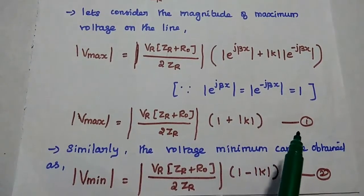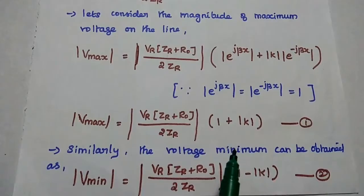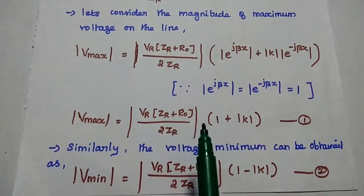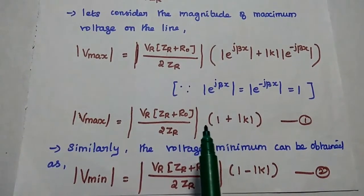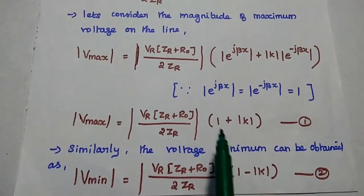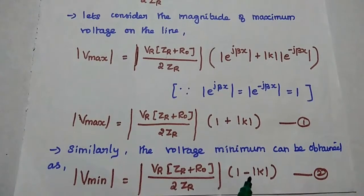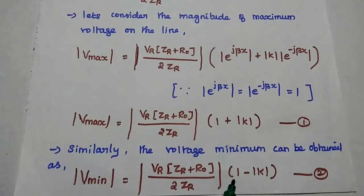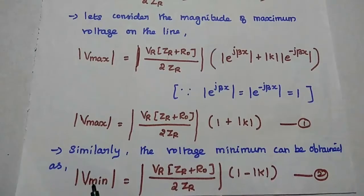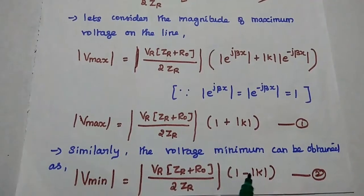That is the first equation. Similarly, we can get the voltage minimum value. There is only one difference between this maximum and minimum: in the maximum we have the plus sign, and in the minimum we have the minus sign. So V-minimum equals Vr into Zr plus R-naught by 2Zr, into 1 minus modulus K. Consider that as the second equation.